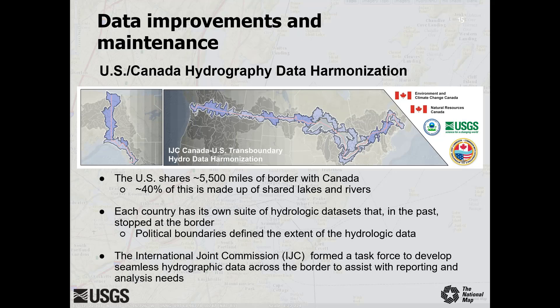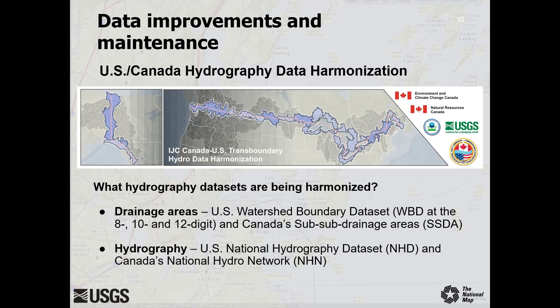The International Joint Commission formed a task force to develop seamless hydrographic data across the border to assist with reporting and analysis needs. The task force is made up of members from the International Joint Commission, U.S. Geological Survey, Environmental Climate Change Canada, and Natural Resources Canada. Two fundamental geospatial datasets are being harmonized: drainage areas, or hydrologic units, and hydrography. Within the United States and Canada, drainage areas are defined by the Watershed Boundary Dataset (WBD) and sub-subdrainage areas (SSDA), respectively.